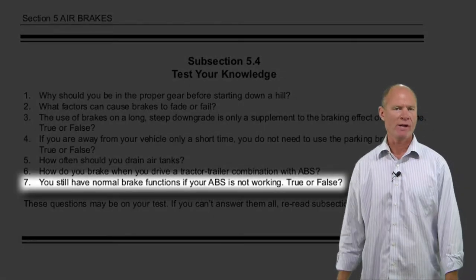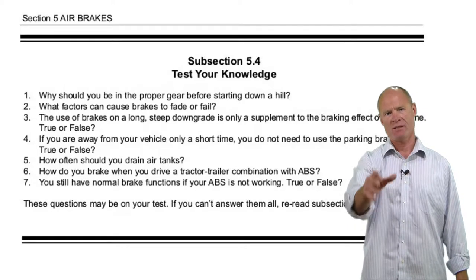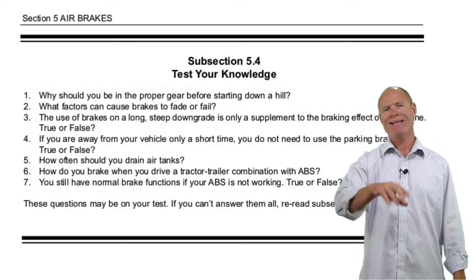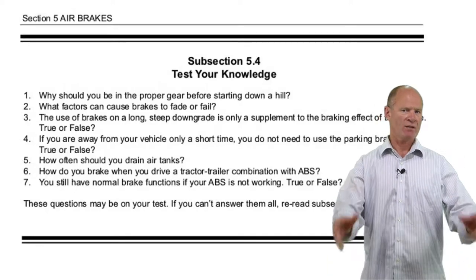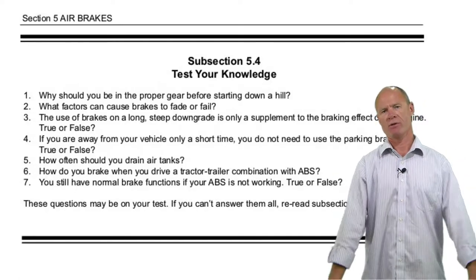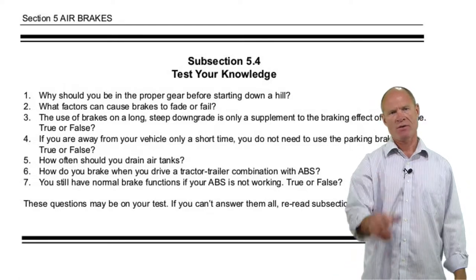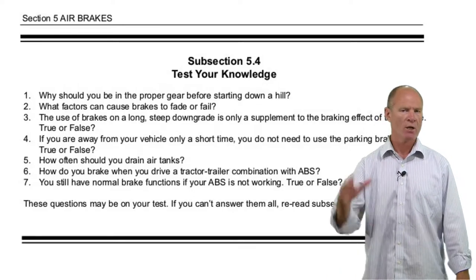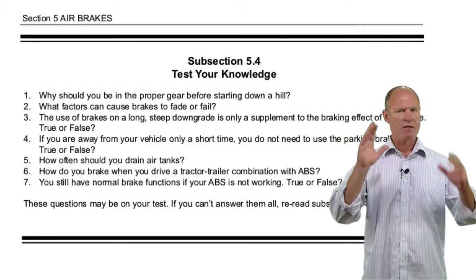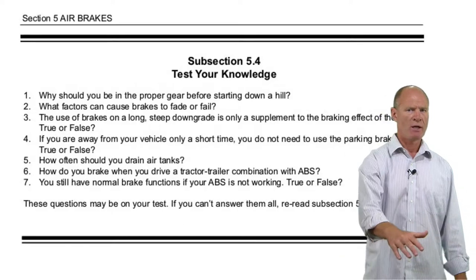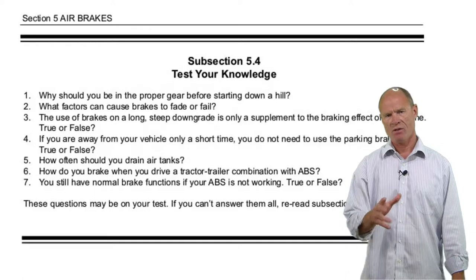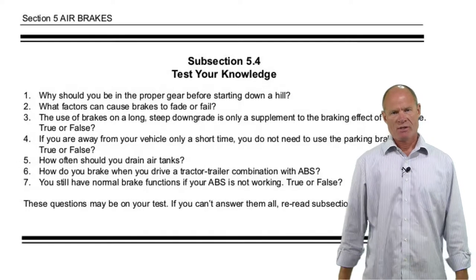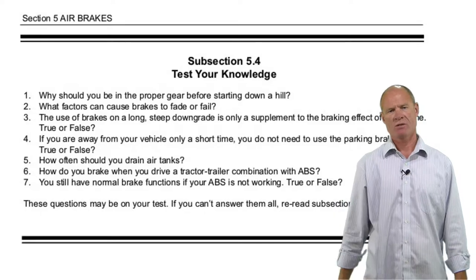Last question: you still have normal brakes if the ABS is not working. You know that because the ABS light stays on even after you've exceeded five miles per hour. The answer is true — once the ABS fails and the light stays on, they revert to normal brakes. Know that if the ABS is not working, you can lock up the wheels, so you'll need to do stab braking or threshold braking: brake hard to the point of lock-up, release the brakes, look in the direction you want to go, reassess, and reapply hard — keep doing that until the vehicle comes to a safe stop or you steer around the obstacle.